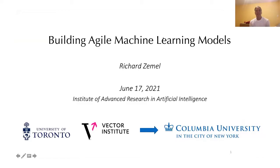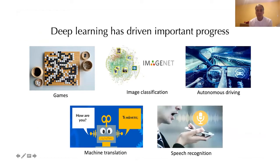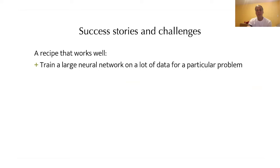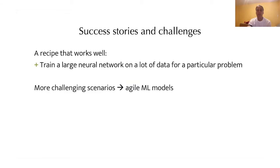Thank you very much. Today I'd like to speak about building agile machine learning models. Deep learning has driven all kinds of progress in areas that have made it through the media a lot these days, starting with some of the original work in image classification and speech recognition, and very actively pursuing things like autonomous driving and machine translation and the well-known successes in games. The way it typically works is that you train a very large neural network on a lot of data for a particular problem.